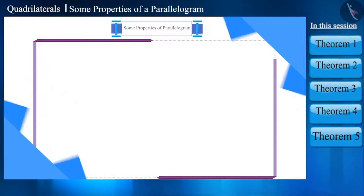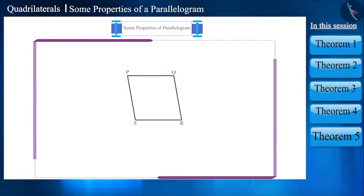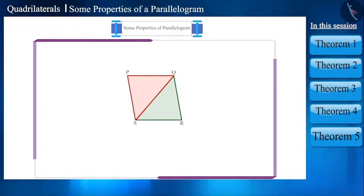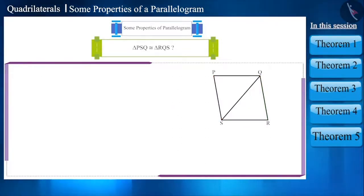Let's construct a parallelogram PQRS. If we combine these two vertices to form diagonal QS, then we will get two triangles. Can we say something about these triangles? Will these two triangles be congruent? Let's check it out.